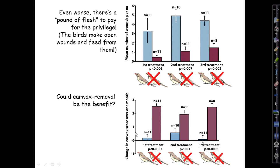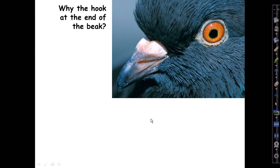They also noticed a real downside to having the birds: oxpeckers peck open wounds in the buffalo's skin and feed from them, which is perhaps their primary reason for being there. This was unambiguously significant in all three treatments — a huge and highly significant difference between buffaloes with birds removed, who got almost no wounds, and those with birds, who got lots. They also noticed that buffaloes with birds had very low levels of earwax relative to those without birds, who accumulated much more — so apparently oxpeckers eat earwax. But the authors were unable to prove this was actually beneficial for the buffaloes.